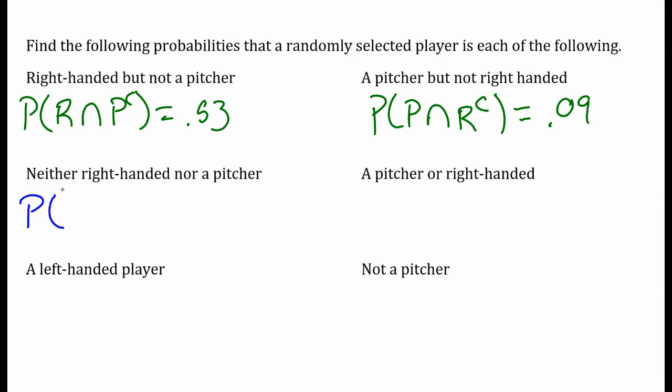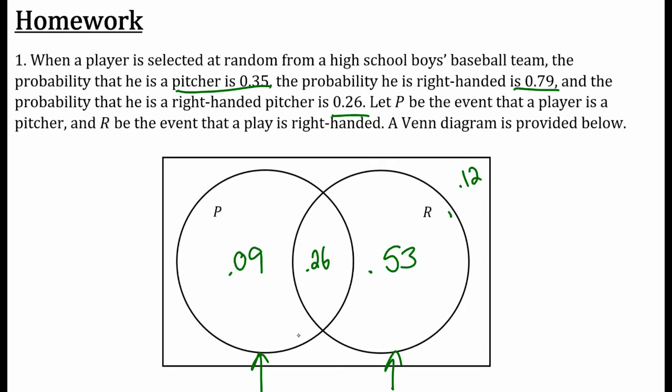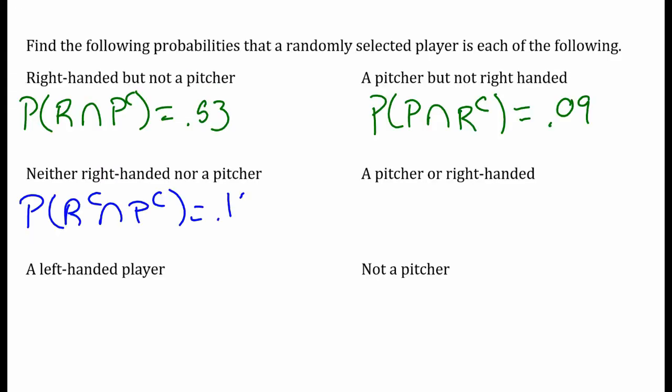What's the probability that they're not right-handed AND they're not a pitcher? So who's not right-handed and who's not a pitcher? Who doesn't fall in the P circle and who also doesn't fall in the R circle? So who's on the outside? That's where that 0.12 comes in, that 12% comes in.